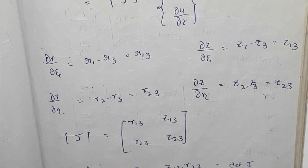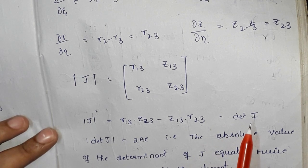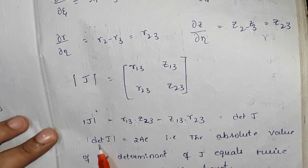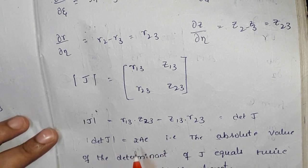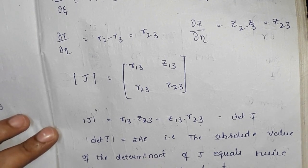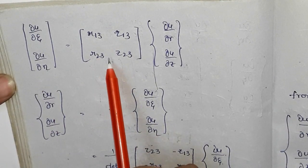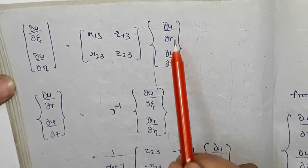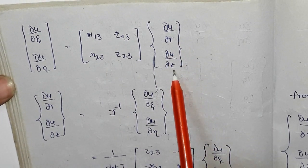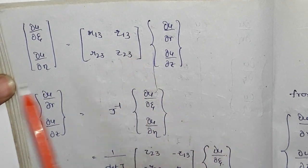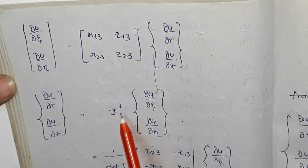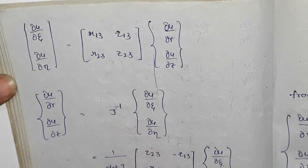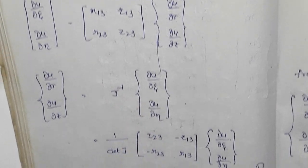The determinant |J| equals twice the area of the element, written as 2Ae. This is the Jacobian matrix. We need its inverse J⁻¹ to find ∂U/∂R and ∂U/∂Z. The J inverse formula gives (1/|J|) times the adjugate of J. Using ∂U/∂η, ∂U/∂ζ, and the J inverse, we obtain the required spatial derivatives.